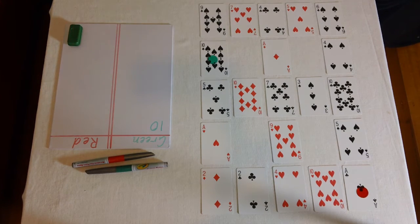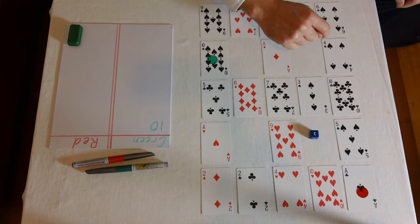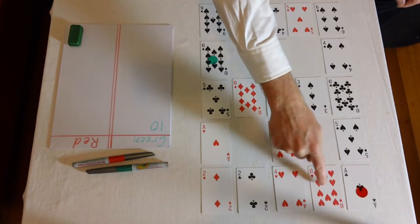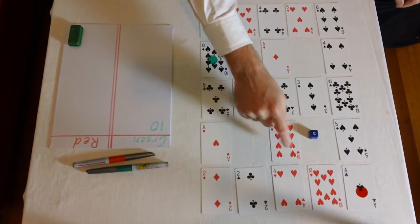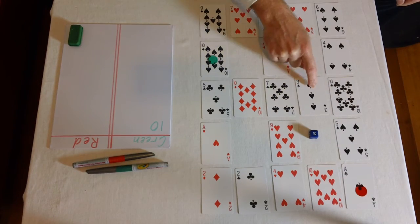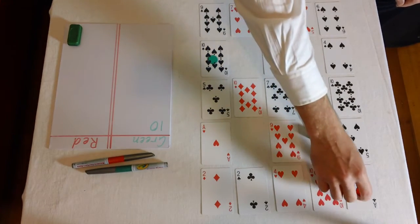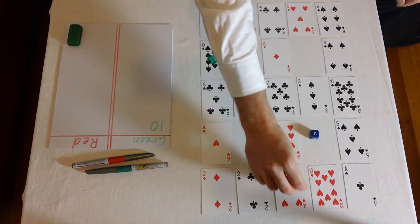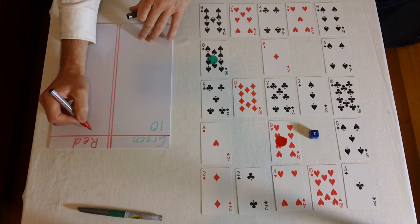Now it's the red player's turn and red rolls a three. So they need to see where the highest number is that they can land on. They could go one, two, three in various directions. But it looks like nine is the highest so they're going to land on that. So they'll go one, two, three, land on a nine and give themselves nine points.